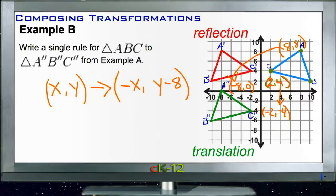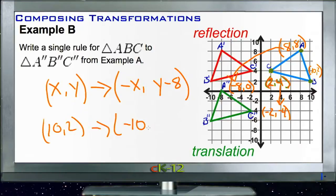We can verify: if B was originally (10, 2), it becomes (-10, 2 - 8) = (-10, -6), and that matches B double-prime on our graph. So we can write a single rule for that composed transformation — the glide reflection we performed.